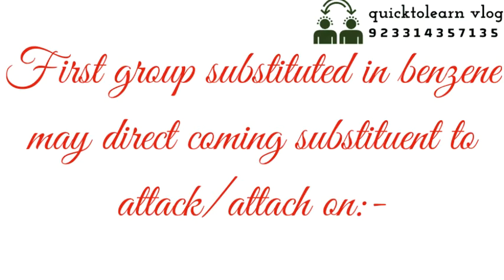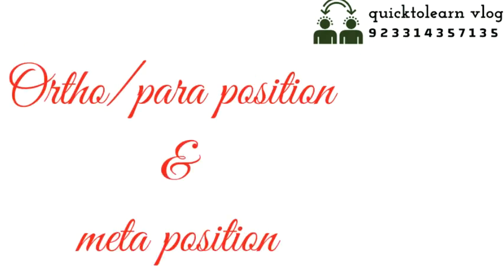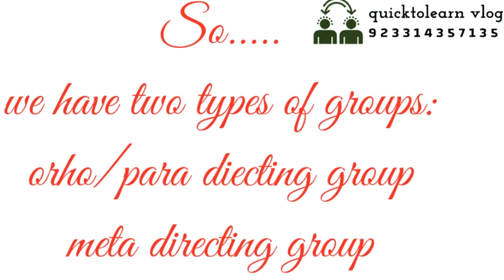The first substituent is responsible for directing the incoming substituent. So we have two types of groups: ortho-para directing groups and meta directing groups.